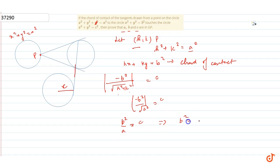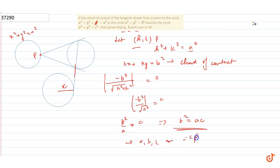So ye aa gaya ki b² = ac, aur ye tabhi hota hai jab a, b, c are in GP. So hum bol sakte hain: a, b, c are in GP.